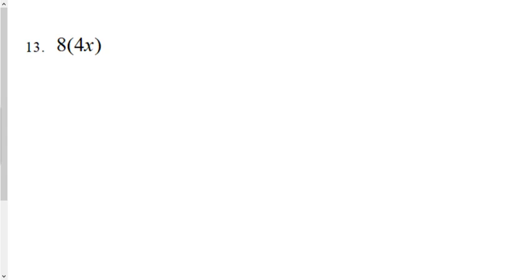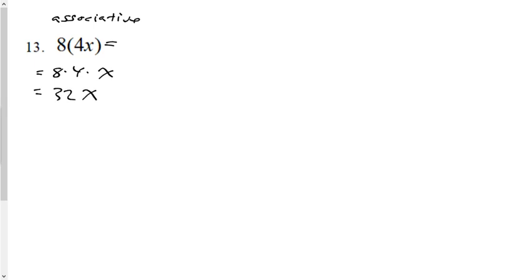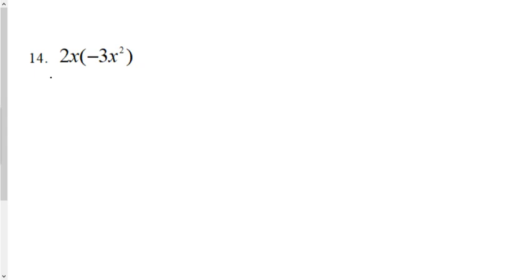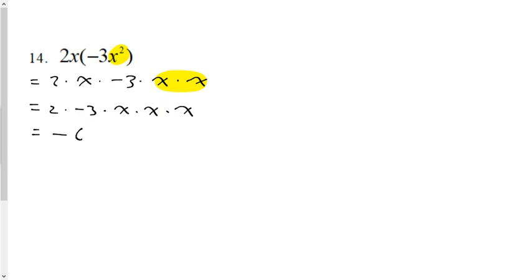Question 13: multiply a monomial by a monomial with no modeling. Use the associative property — rearrange the multiplication; it won't affect the product. 8 times 4 times x is simply 32x. Question 14: associative property again — 2 times x times negative 3 times x times x. Changing x squared into x times x makes it easier: 2 times negative 3 is negative 6, and x times x times x is x cubed. Solution: negative 6x cubed.